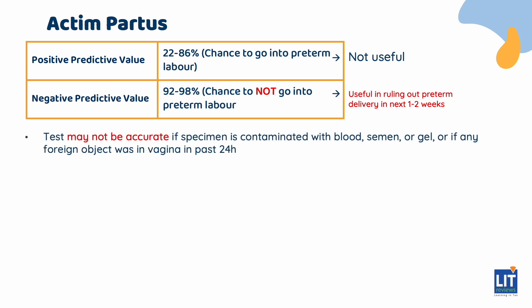Furthermore, the actin partus test will not be clinically useful if the specimen is contaminated with blood, semen, or gel, or if there is a history of any foreign object in the vagina within the last 24 hours. Finally, actin partus is only performed after more than 22 weeks of gestational age.